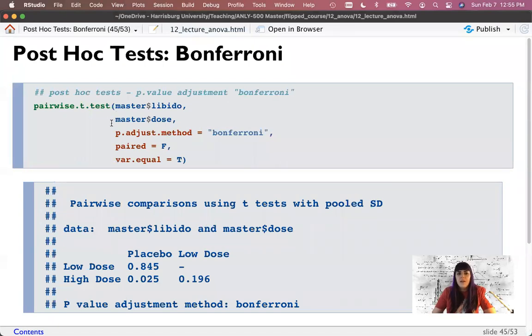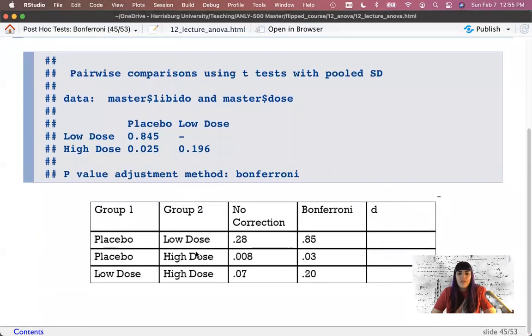So low dose versus placebo is 0.282. So that would not be significant. Placebo versus high dose is 0.008. Low dose versus high dose is 0.06 or 0.07 rounded up. So this is what would happen if there was no correction, but we shouldn't do that. We should correct. So let's see what happens with Bonferroni. Well, it's the exact same code. You just do p.adjust method equals Bonferroni. And now we can start to see what's happening. So 0.85, 0.03, 0.20. So this is where the adjustment is happening.